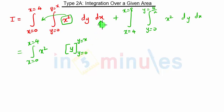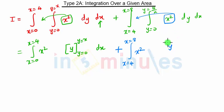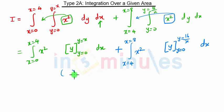This dx will remain as it is. For R2, similarly x will remain constant so we take x squared outside, giving integration from x equal to 4 to 8 of x squared, and integration of dy is y, with the lower limit and upper limit applied, and dx remains.